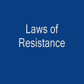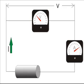Let's have a discussion about laws of resistance. Let's think about a current carrying conductor which carries a certain current at a certain voltage applied across it. The length of the conductor is L meters and the current flowing through the conductor is I.